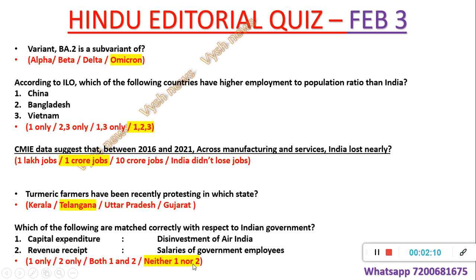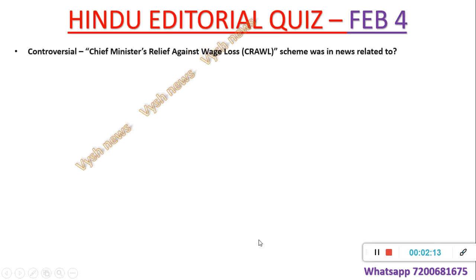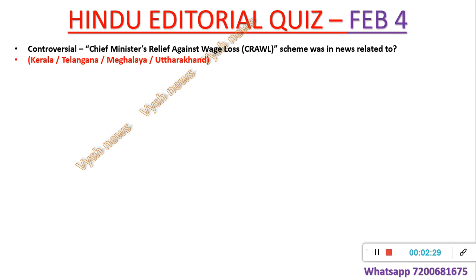Now for February 4 — today's questions. A controversial Chief Minister's Relief scheme was in news against wage laws. This scheme was confusing to many people; a very big editorial article covered it. Which state is this related to — Kerala, Telangana, Meghalaya, or Uttarakhand?